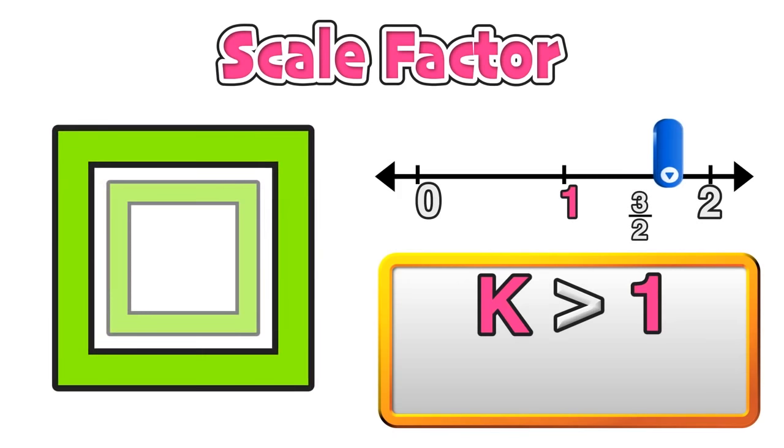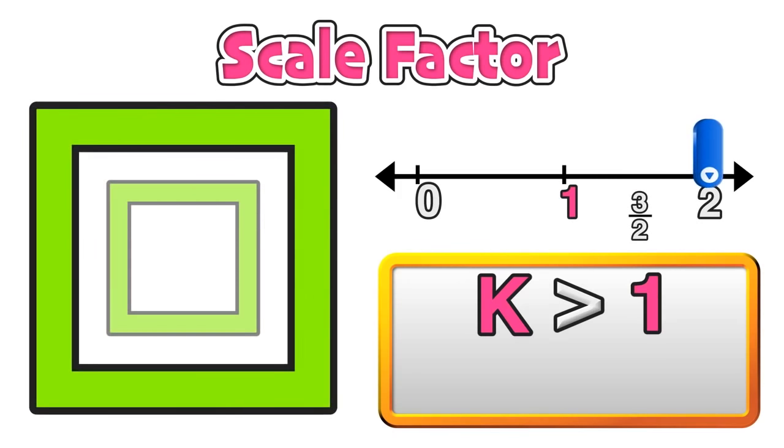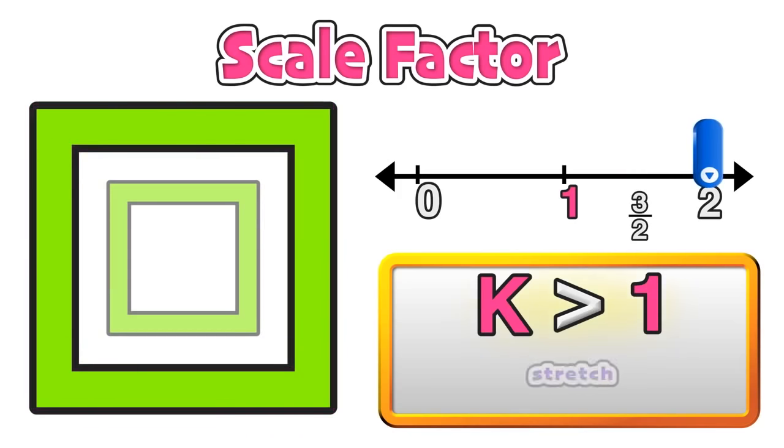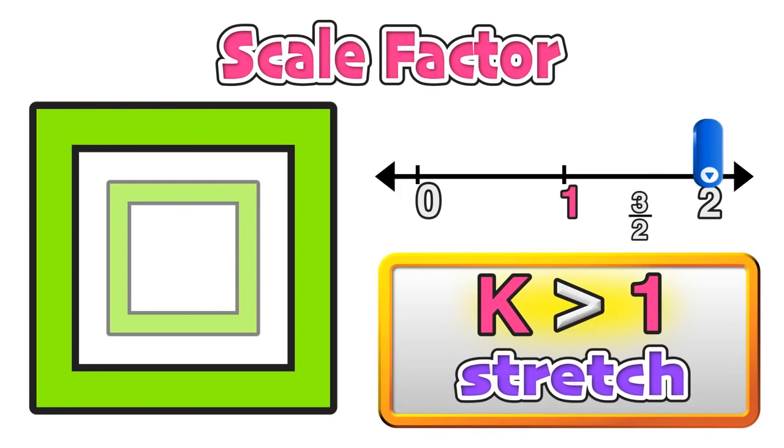The larger that k is, the larger the image is being stretched out to be, in this case two times as large. So when our scale factor k is greater than 1, the image is stretched to a larger size.